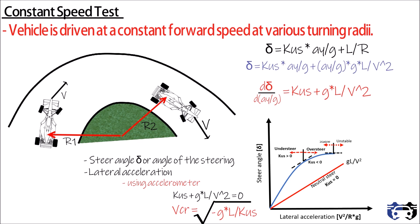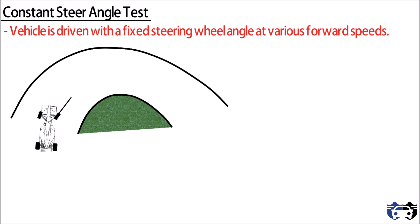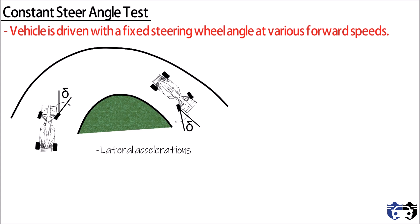The third test is the constant steer angle test. In this test, the vehicle is driven with a fixed steering angle at various forward speeds. Here you can see the car is turning with constant steer angle delta at different speeds such as V1 and V2. For testing, two things are required: the lateral acceleration, calculated using an accelerometer, and the curvature, calculated as 1/R equals ay divided by V squared.